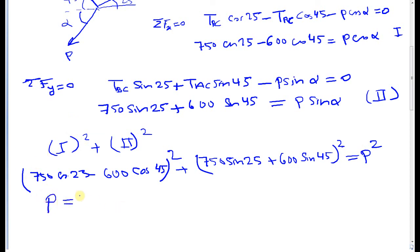And alpha, if I divide equation two by one, I will have tan alpha equals 750 sine 25 plus 600 sine 45 over...